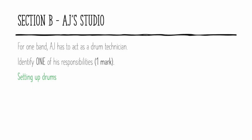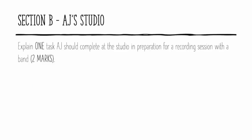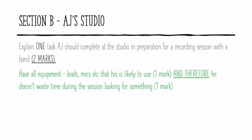The next question: explain one task AJ should complete at the studio in preparation for a recording session with a band. This is worth two marks, so use the same system as before. My answer: have all equipment — leads, mics and everything like that — that he is likely to use, and therefore he doesn't waste time during the session looking for something. One mark for stating he needs all equipment ready, one mark for explaining why — so that he doesn't waste time during the session.